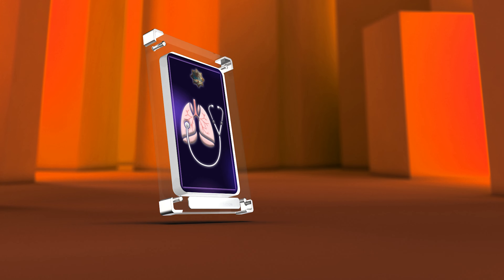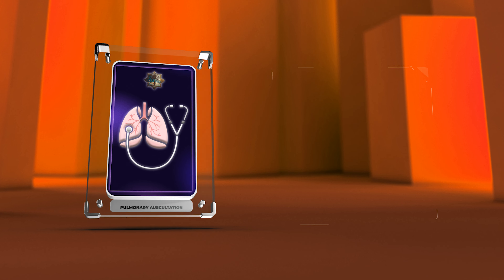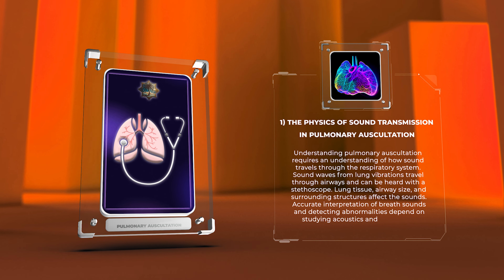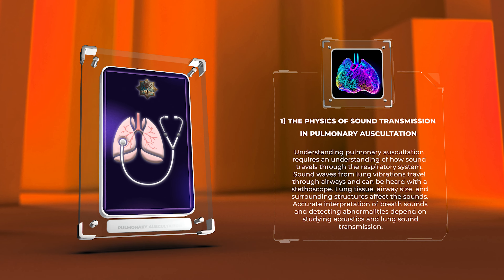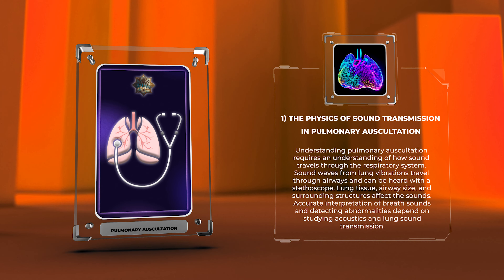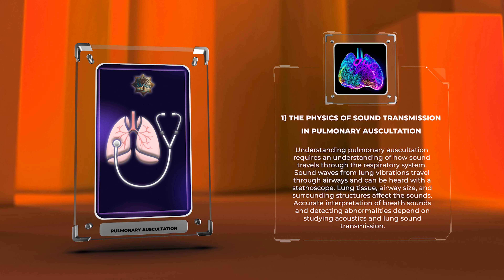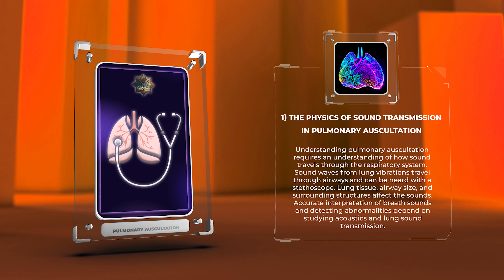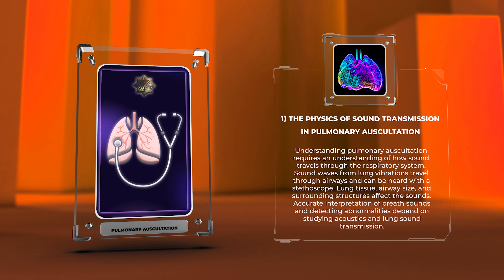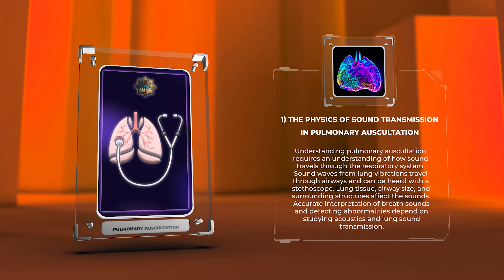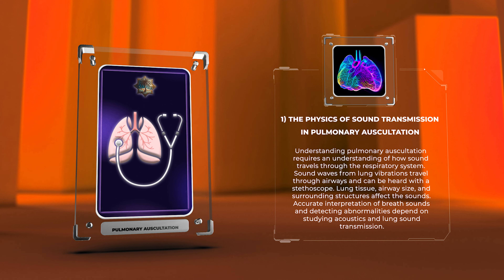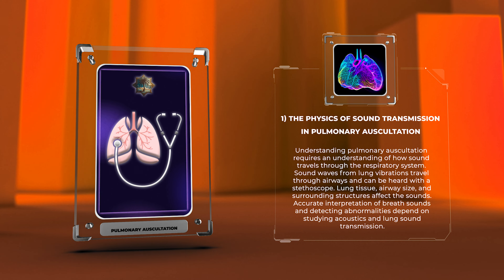Understanding pulmonary auscultation requires an understanding of how sound travels through the respiratory system. Sound waves from lung vibrations travel through airways and can be heard with a stethoscope. Lung tissue, airway size, and surrounding structures affect the sounds. Accurate interpretation of breath sounds and detecting abnormalities depend on studying acoustics and lung sound transmission.